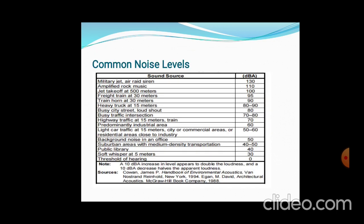Some common noise levels: military jet aircraft — 140 dB; civil defense sirens — 130 dB; amplified rock music — 110 dB; train horn at 30 meters — 80 to 90 dB; busy intersections — 70 to 80 dB; highway traffic at 50 meters — 70 dB; predominantly industrial area — 60 dB; public library — 40 dB; soft whisper at 5 meters — 30 dB; threshold of hearing — 0 dB.